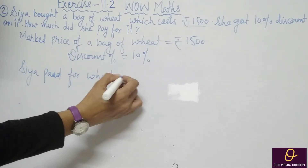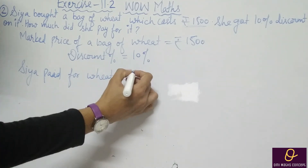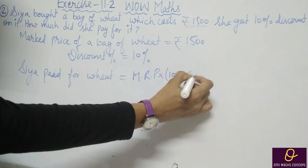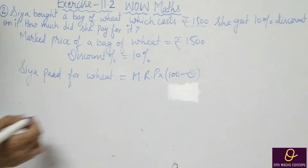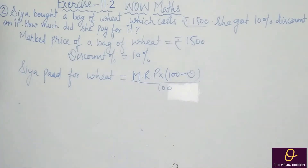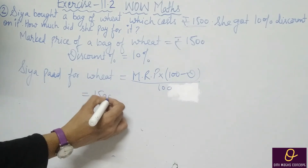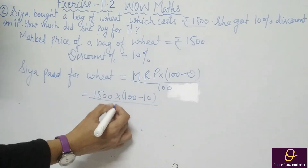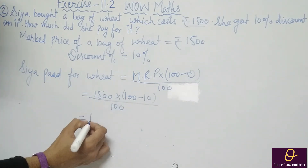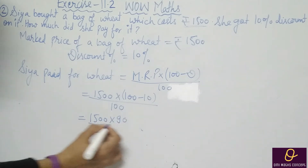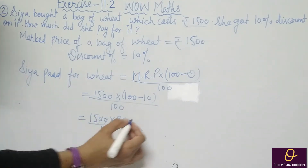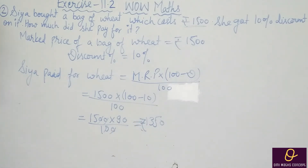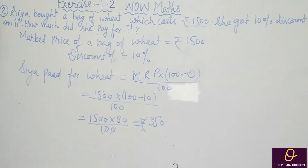Sia paid using the formula: marked price into (100 minus discount) divide by 100. That equals 1,500 into (100 minus 10) divide by 100, which is 1,500 into 90 divide by 100. After cancellation we get Rs. 1,350. This is your answer.